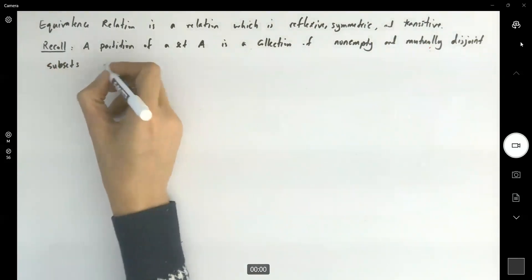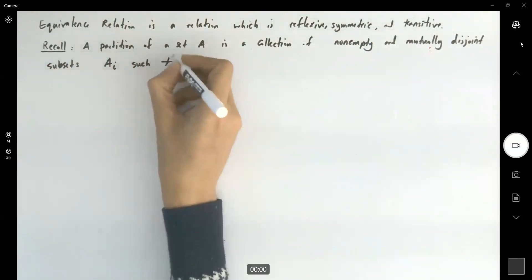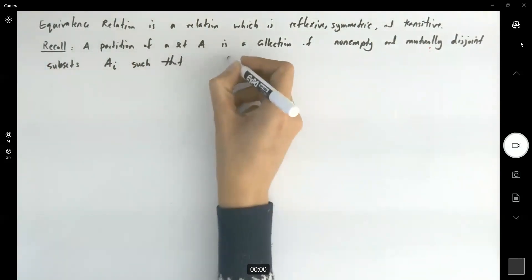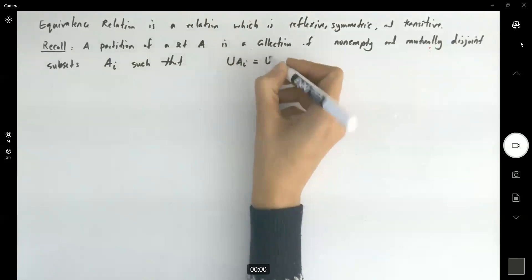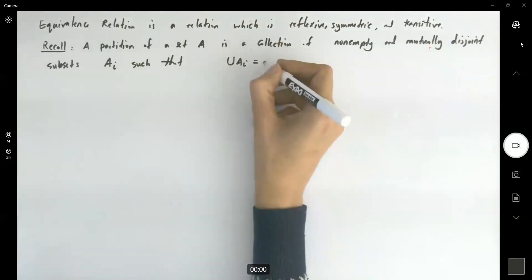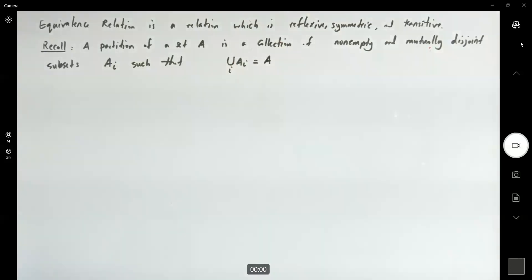Like A sub i's such that the union of these subsets is equal to set A itself. So this was the definition of partition.